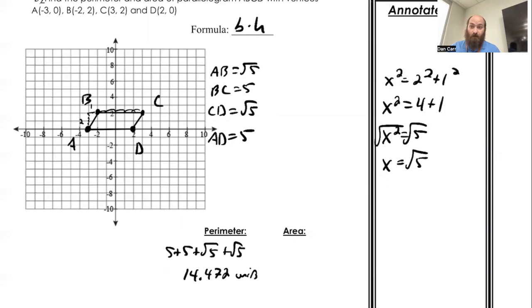Formula is base times height. Make sure your base and height are perpendicular to each other. So in this case, this length will be my height. The base is 5. The height is 2 when I count that out. It's just 1, 2. So area for that is just 5 times 2, giving me 10 units squared.